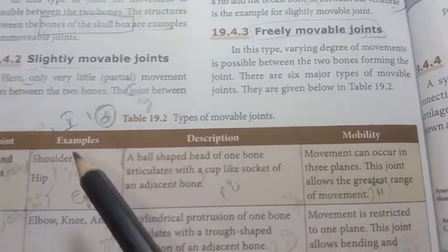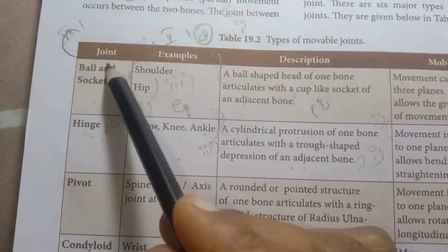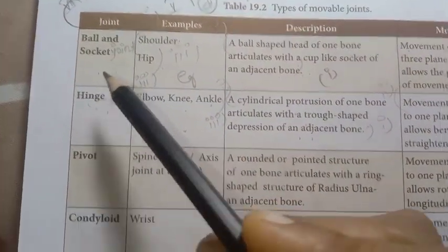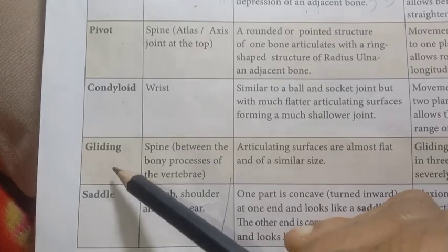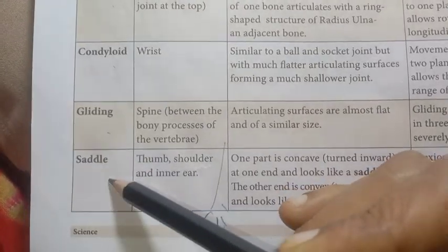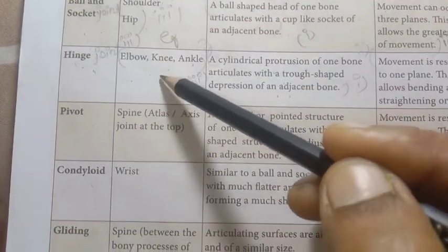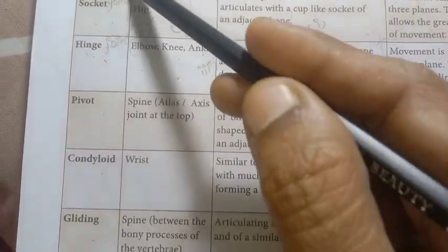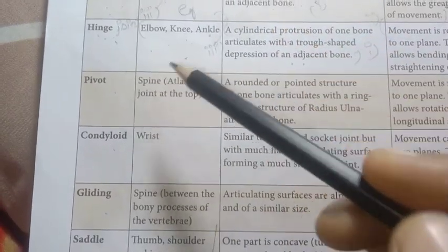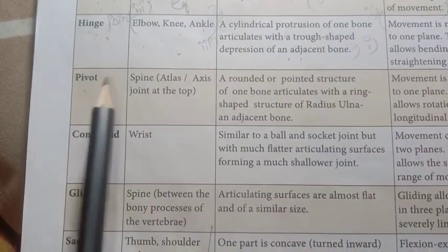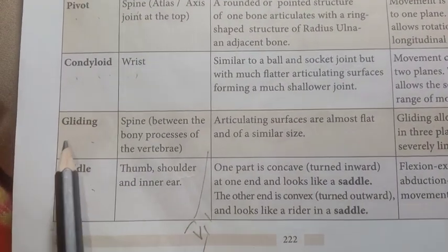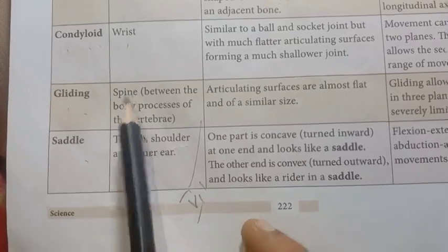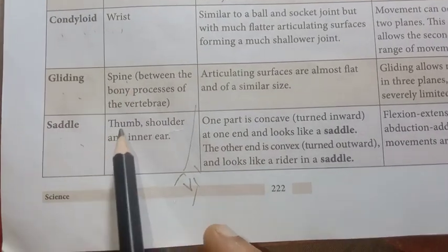Freely movable joints have six major types: ball and socket joint, hinge joint, pivot joint, condyloid, gliding, and saddle joint. Examples: shoulder and hip for ball and socket; elbow, knee, and ankle for hinge; spine for pivot; wrist for condyloid; spine for gliding; and thumb for saddle joint.